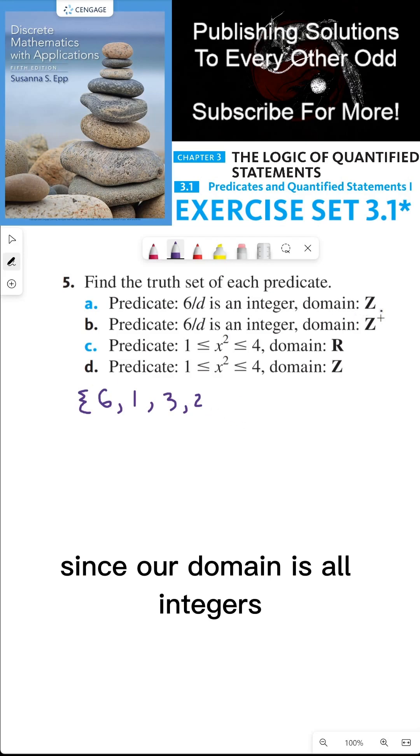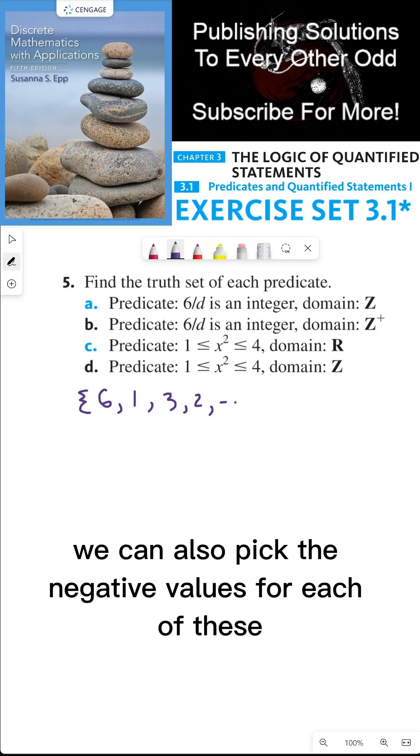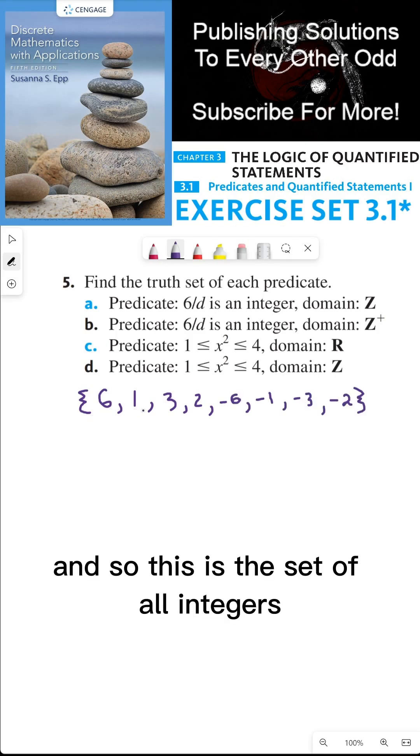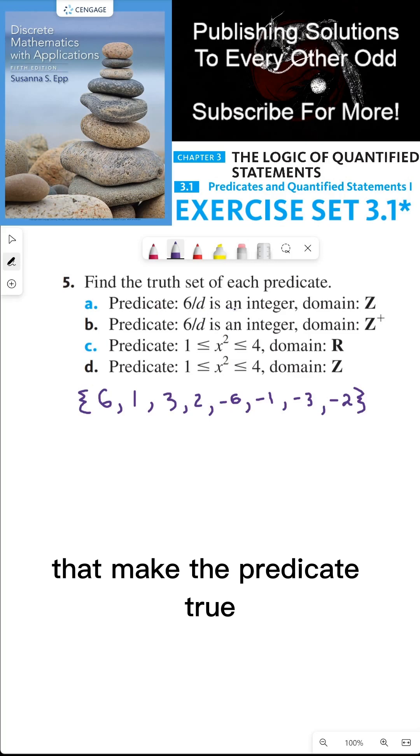Since our domain is all integers, we can also pick the negative values for each of these. And so this is the set of all integers that make the predicate true. So that's part A.